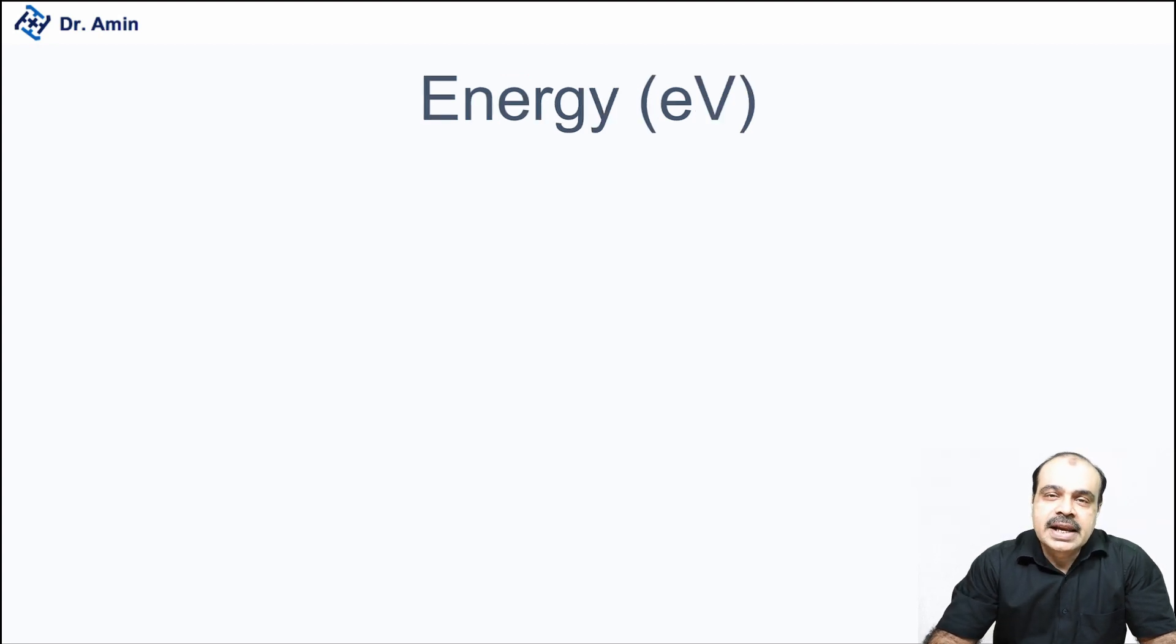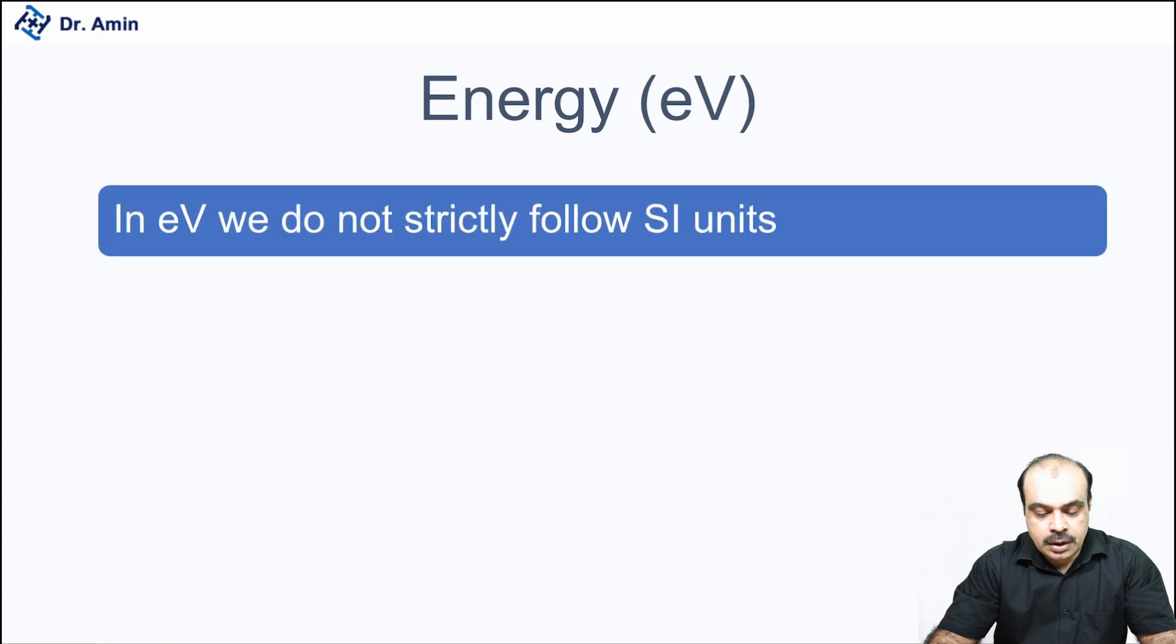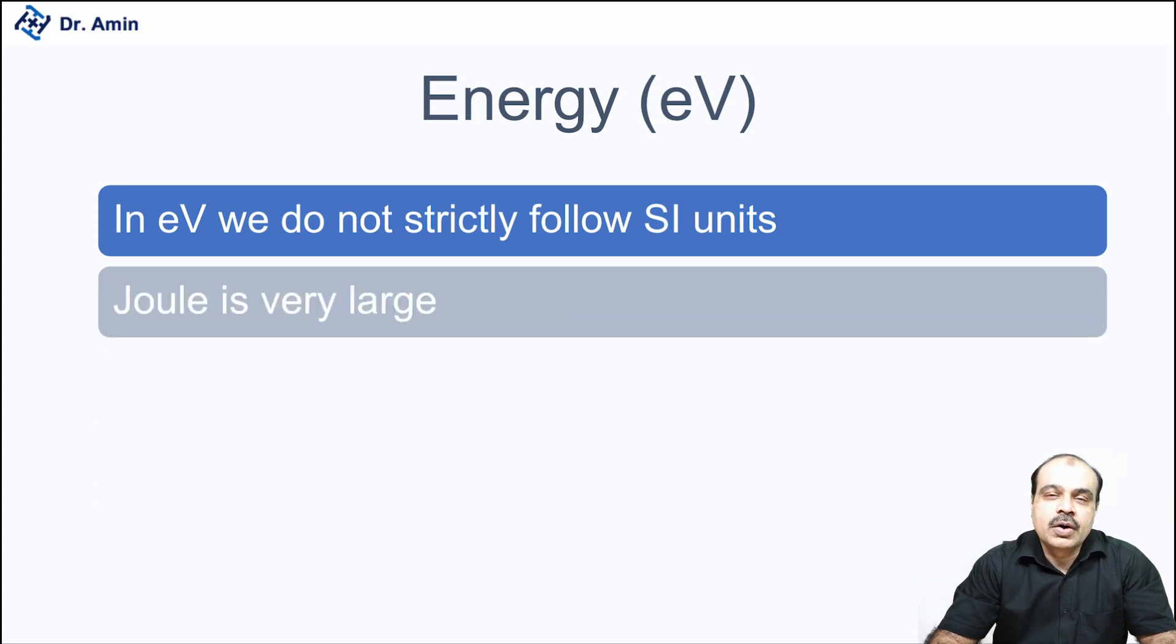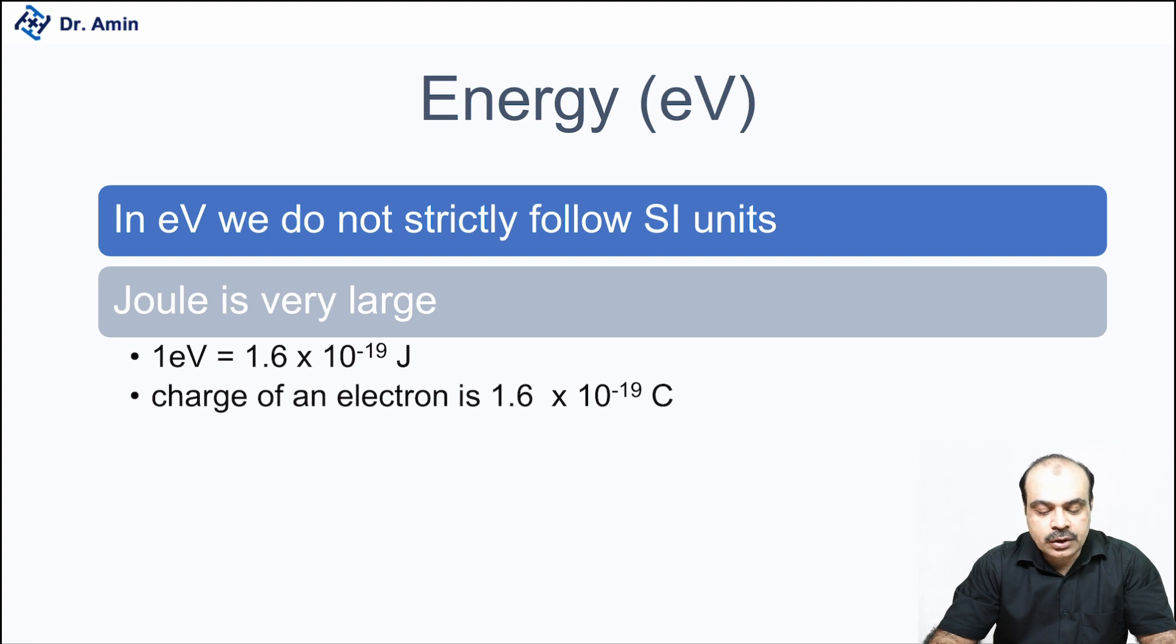Then we come to another thing, which is the electron volt. And for the electron volt, we don't strictly follow SI units, but we derive a sort of thing to make our working easy, as we are going to discuss wherever the energy of electrons and all those interactions are going to occur. So we will be focusing more on deriving our energy unit, which is the electron volt, because joule is very large. So what we do is we calculate the charge of electron, which is 1.6 × 10⁻¹⁹ coulomb, and we convert it into electron volt.